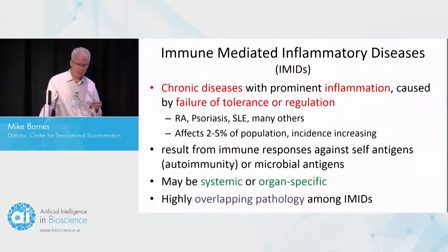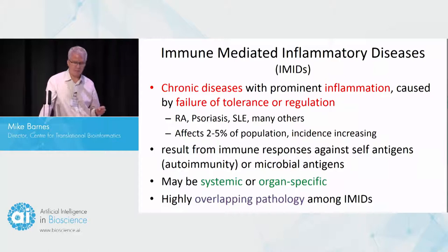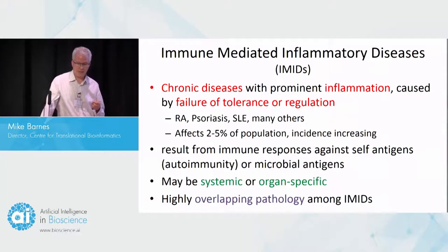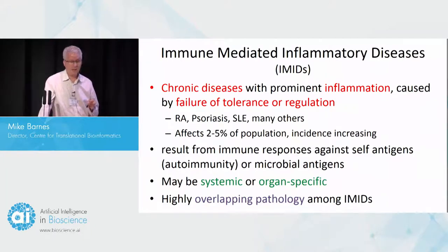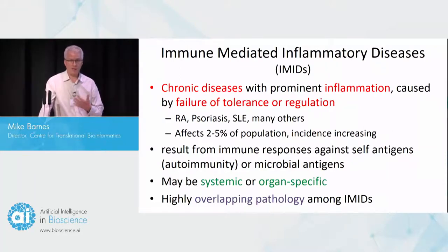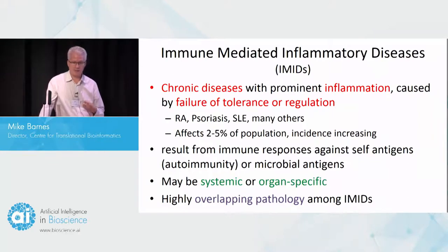They're thought to be the result of immune responses against the self — autoimmunity — or they may also be spurred by a microbial antigenic effect. They can be systemic; probably most of them actually have systemic effects, or they can be organ-specific. So we characterize RA due to joint inflammation, but it has systemic effects.